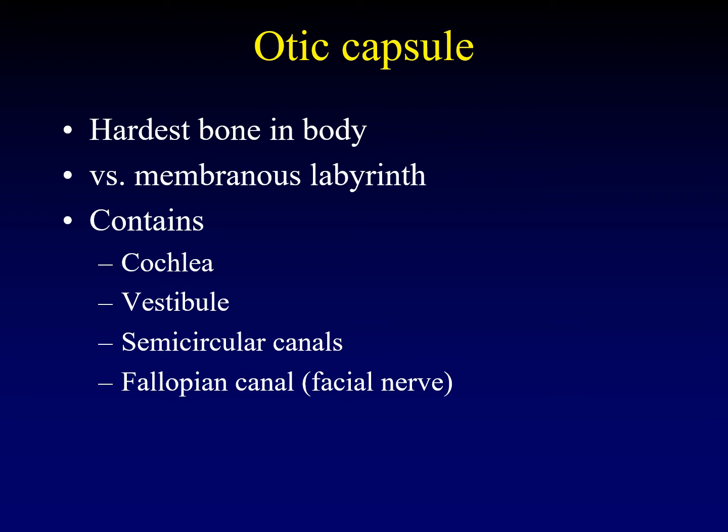We distinguish between the otic capsule, which is something that we evaluate on CT, and the membranous labyrinth, which are the membranes separating the different fluid-containing structures within the inner ear. When we are looking at an MRI, we talk about the membranous labyrinth. When we are looking at a CT, we talk about the otic capsule.